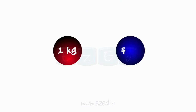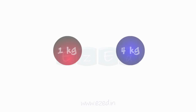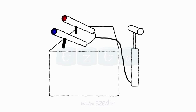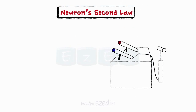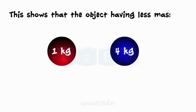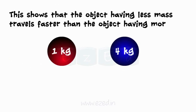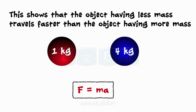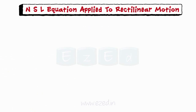Let us consider two balls of different mass. The first ball, red in color, weighs 1 kg, and the second ball, blue in color, weighs 4 kg. We put these balls into an air pressure cannon which applies equal force to both. When the force is applied, the red ball travels faster and farther than the blue ball. This shows that objects with less mass travel faster than objects with more mass. Newton's second law states that the strength of the force applied equals the mass multiplied by the acceleration. Newton's second law is basically used to determine the acceleration of a particle.